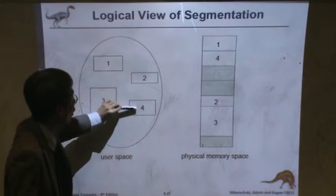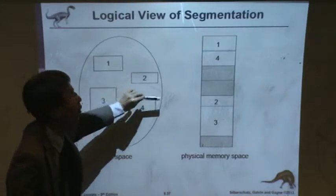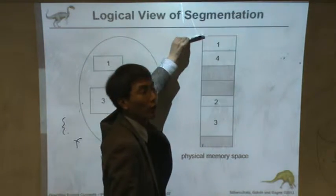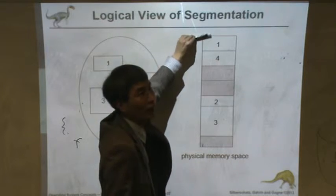At that time, why don't we logically combine 1 and 4 and allocate them next to each other in the memory.